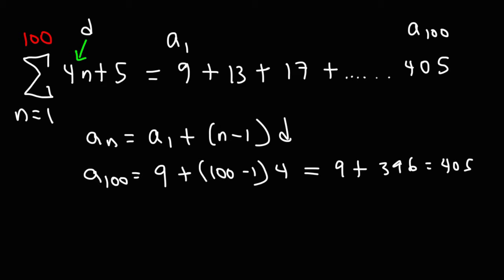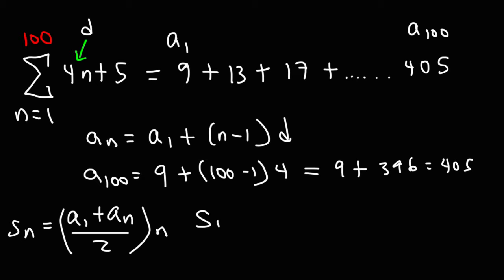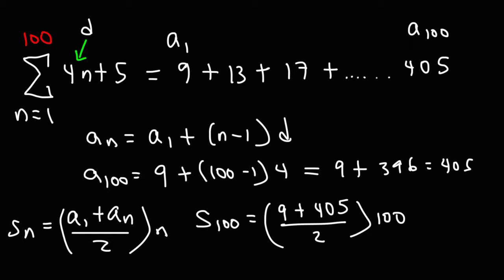Now that we have the first and the last term, we can use the partial sums formula. The sum of the first 100 terms is the first term (9) plus the last term (405), divided by 2, times n which is 100. The average of 9 and 405 — add them and divide by 2 — that's 207. Multiply 207 by 100, and that gives us 20,700. This is the sum of the first 100 terms.